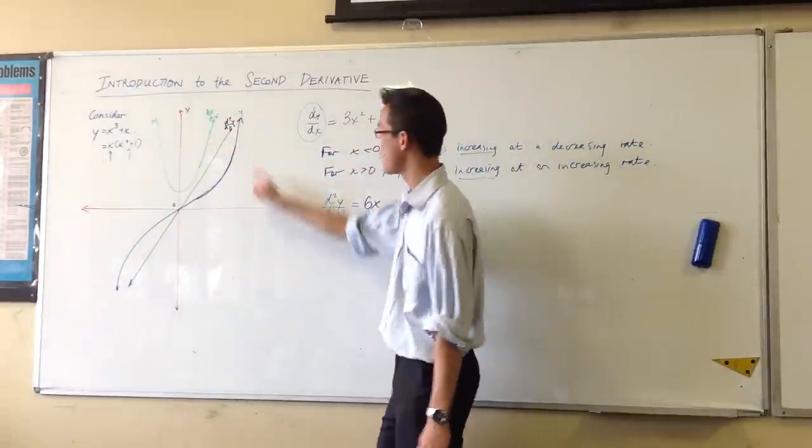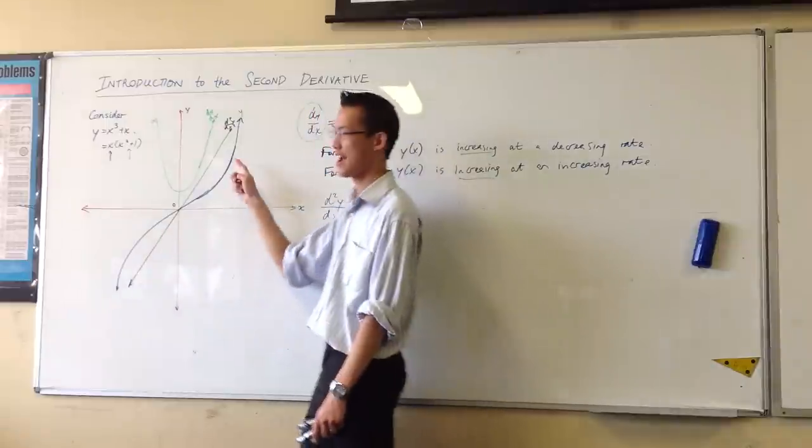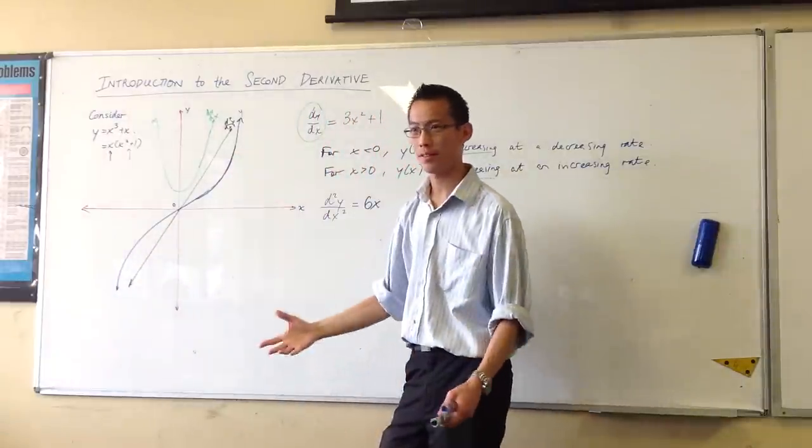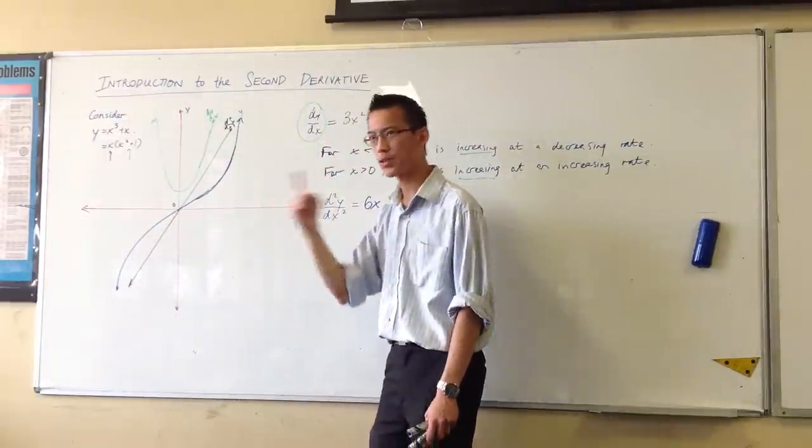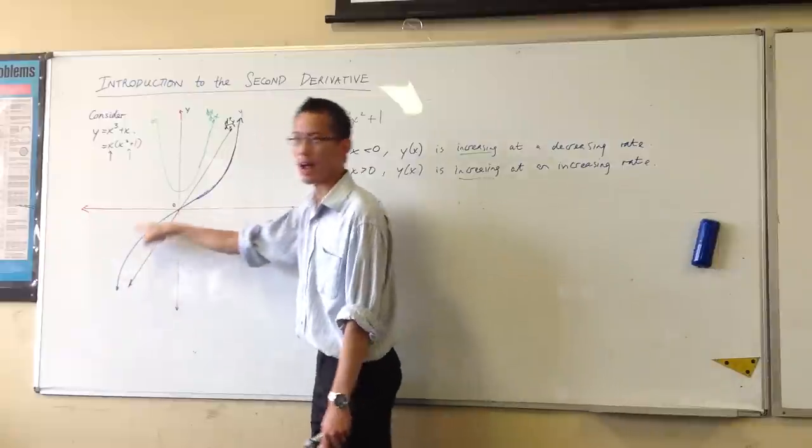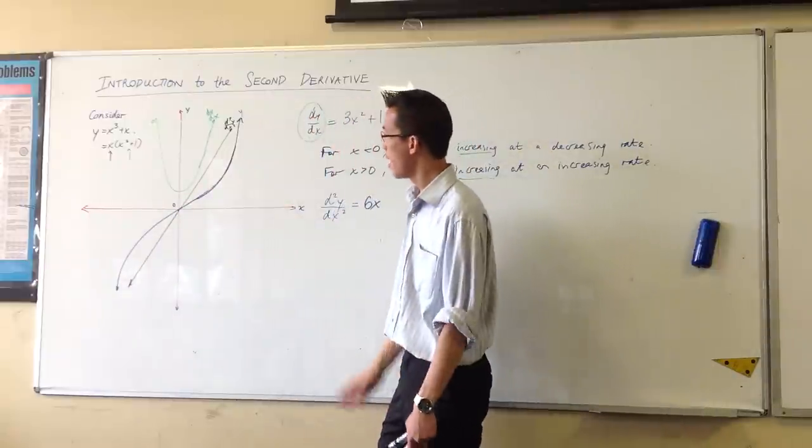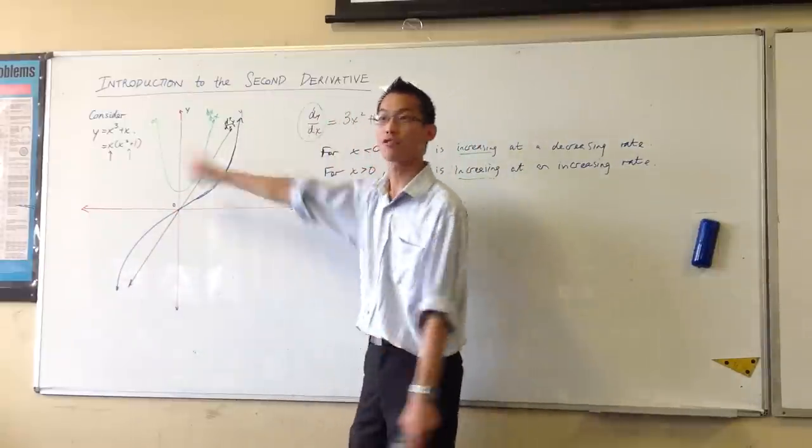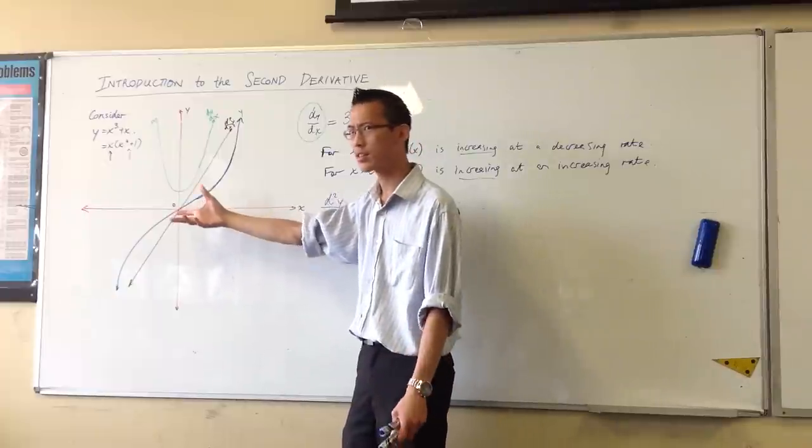I've got three graphs on here, right? Number one, I've got my actual graph, y. In green, I've got the derivative, the first derivative. And the first derivative tells me, what's the blue graph changing like? How's it behaving? And this black graph tells me how the green graph is changing. Now, can you see what's going on?